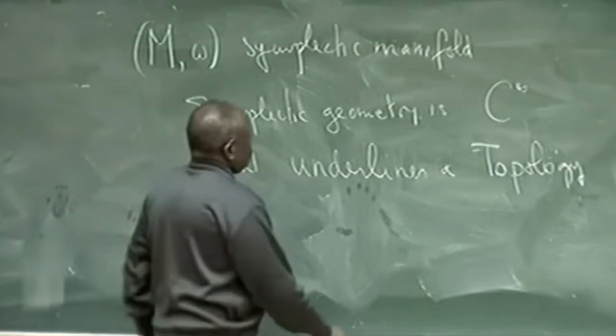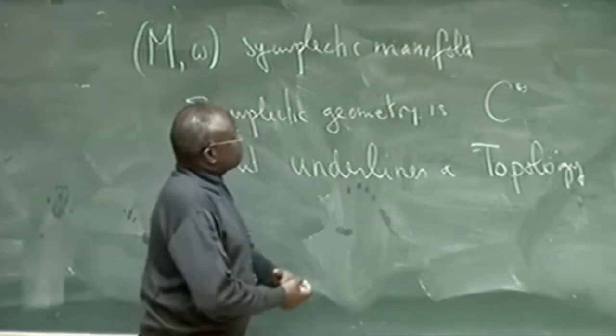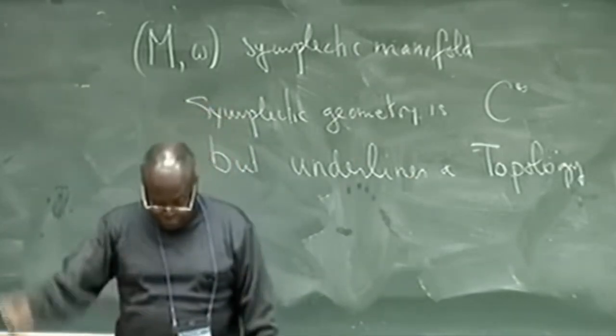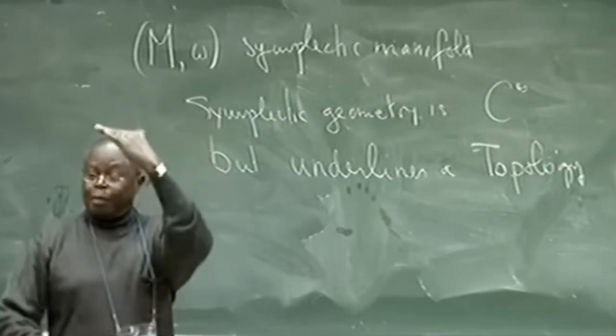On Isomorphic Classical Diffeomorphism Groups 1, Proceedings of the American Mathematical Society, 98, 1986, No. 1, 113-118.